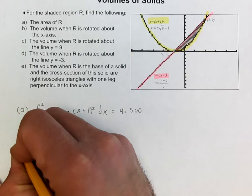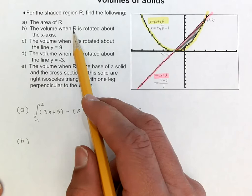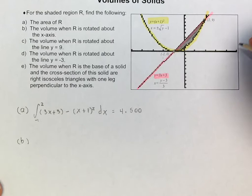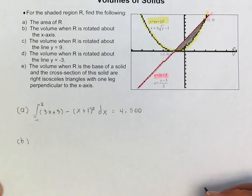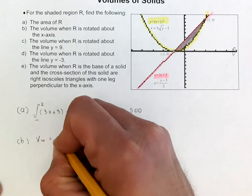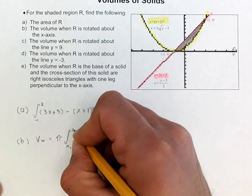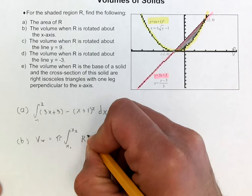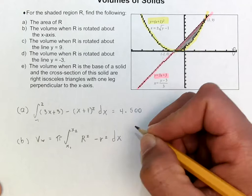On B they're asking us for the volume when R — remember R is the shaded region — is rotated about the x-axis. So if I grab this shaded region and rotate it around the x-axis, this will create a washer, because spinning it around the x-axis creates a shape with a hole in the middle. The formula for the volume of a washer is pi times the integral between x₁ and x₂ of the larger radius squared minus the smaller radius squared dx.